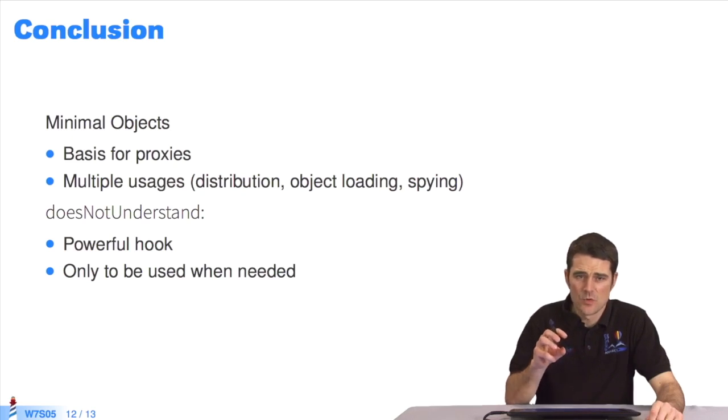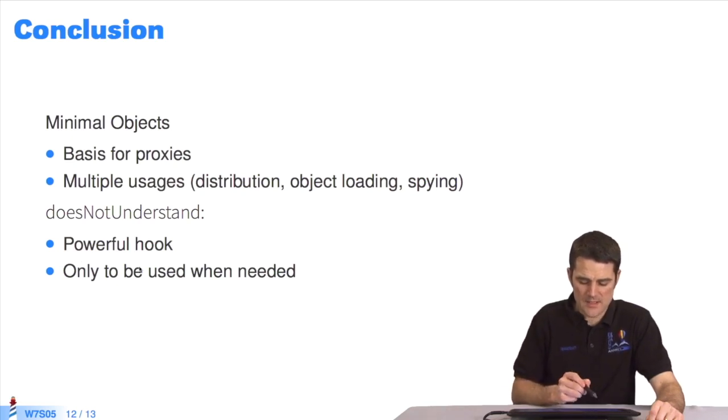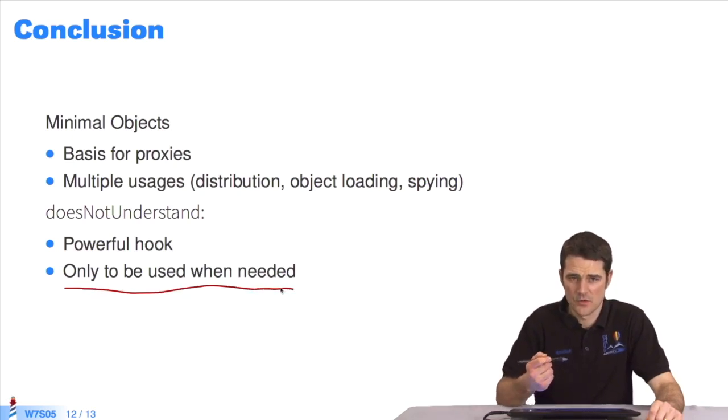In conclusion, we've seen how to use minimal objects. They're not direct instances of the object class, but of the proto object class. They can be the basis for proxies. By redefining the doesNotUnderstand method, we can capture the existence of a failed message, and then redirect the message. It's a powerful hook that provides the basis of many tools in Pharo. But you must be very careful when you use it. It's only to be used when necessary. Don't put it in the domain code yet. It's a highly advanced technique.